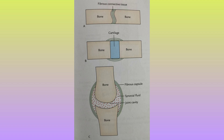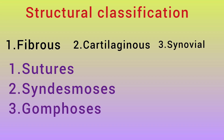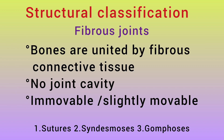In structural classification, where the two bones are connected and the joint cavity is not present: the fibrous joint — two bones connected by fibrous connective tissue; the cartilaginous joint — two bones connected by cartilage; and the synovial joint — two bones connected by a joint cavity with synovial fluid and fibrous capsule. The fibrous joint has three types: sutures, syndesmosis, and gomphosis.